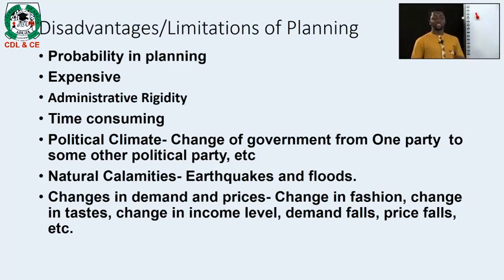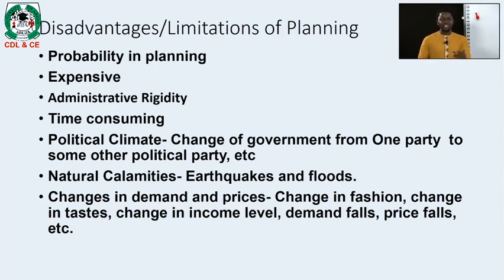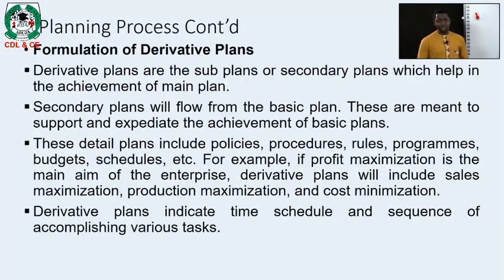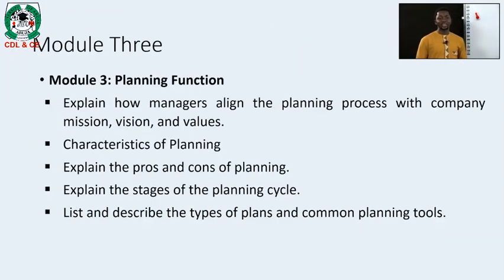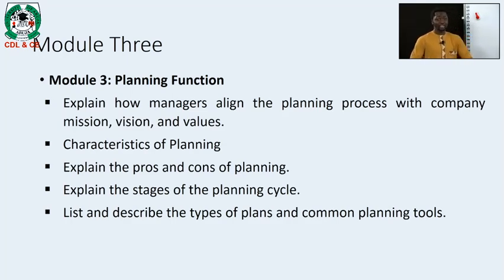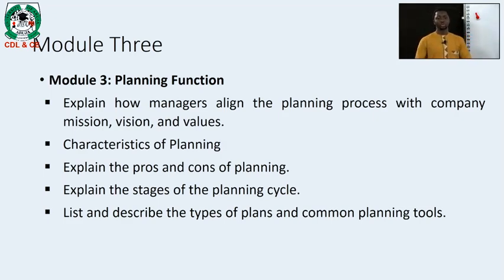Another limitation is changes in demand, prices, fashion and taste, income levels and commodity prices in the marketplace — these factors can limit the efficiency or effectiveness of an organization's plan. This brings us to the end of today's class. We have covered how managers align the planning process with company vision and values, the characteristics of planning, the planning process stages, and the advantages, disadvantages and limitations of planning. Students are also expected to explain the types of plans and common planning tools available to management. Thank you.